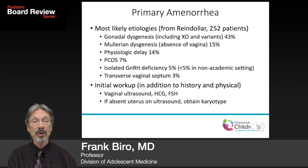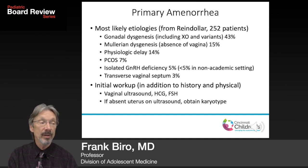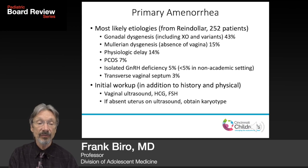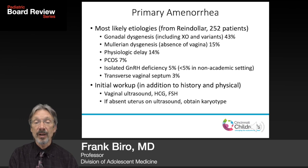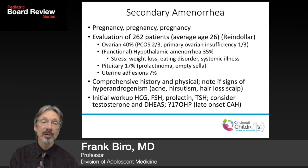The workup for primary amenorrhea, in addition to comprehensive history and physical examination — your two best diagnostic tools — includes vaginal ultrasound, urine hCG, and FSH level. If there is an absent uterus, you would want to obtain a karyotype, thinking about gonadal dysgenesis from the Reindoller data.